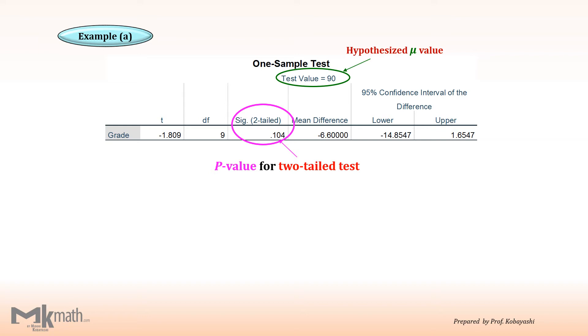Then, how about alpha value? Going back to the question sentence, we can find 5% significance level. So, therefore, alpha should be 0.05.